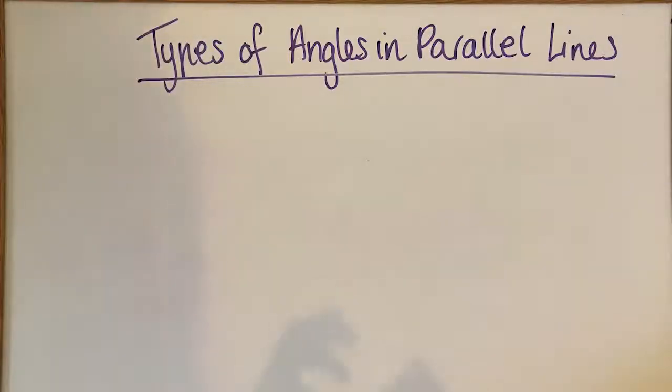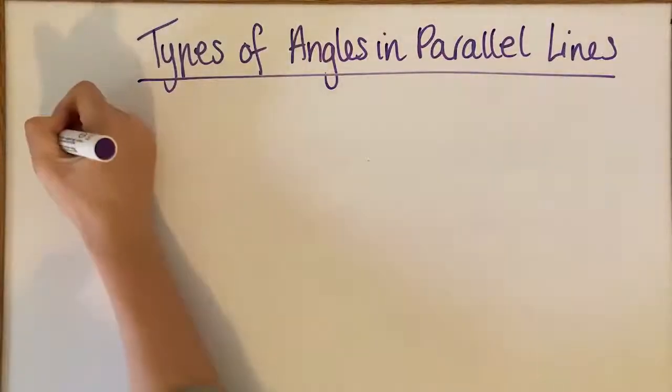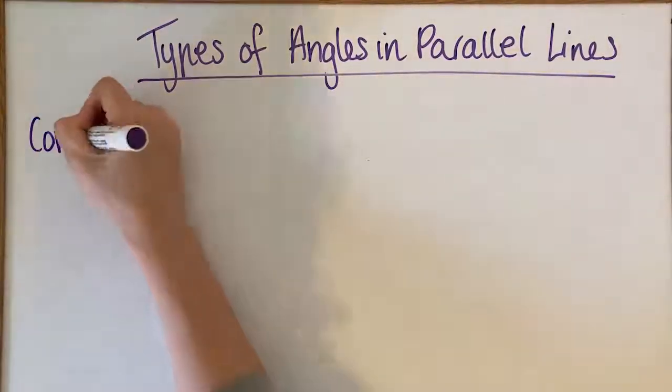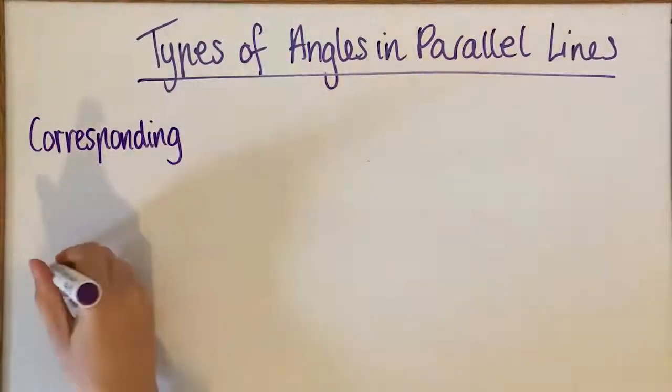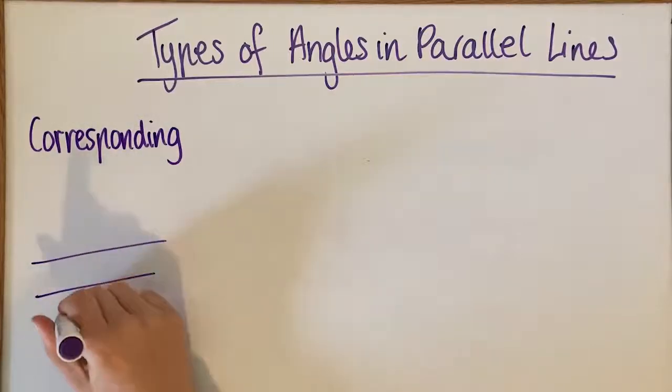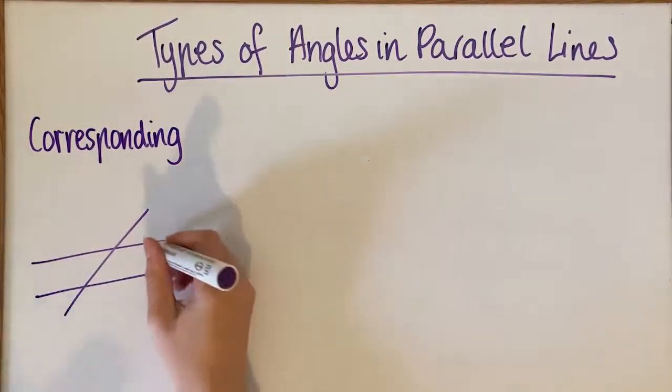Okay, so there are three main types of angles that you can find in parallel lines. The first type is called corresponding, so it might look something like this. These are our parallel lines.